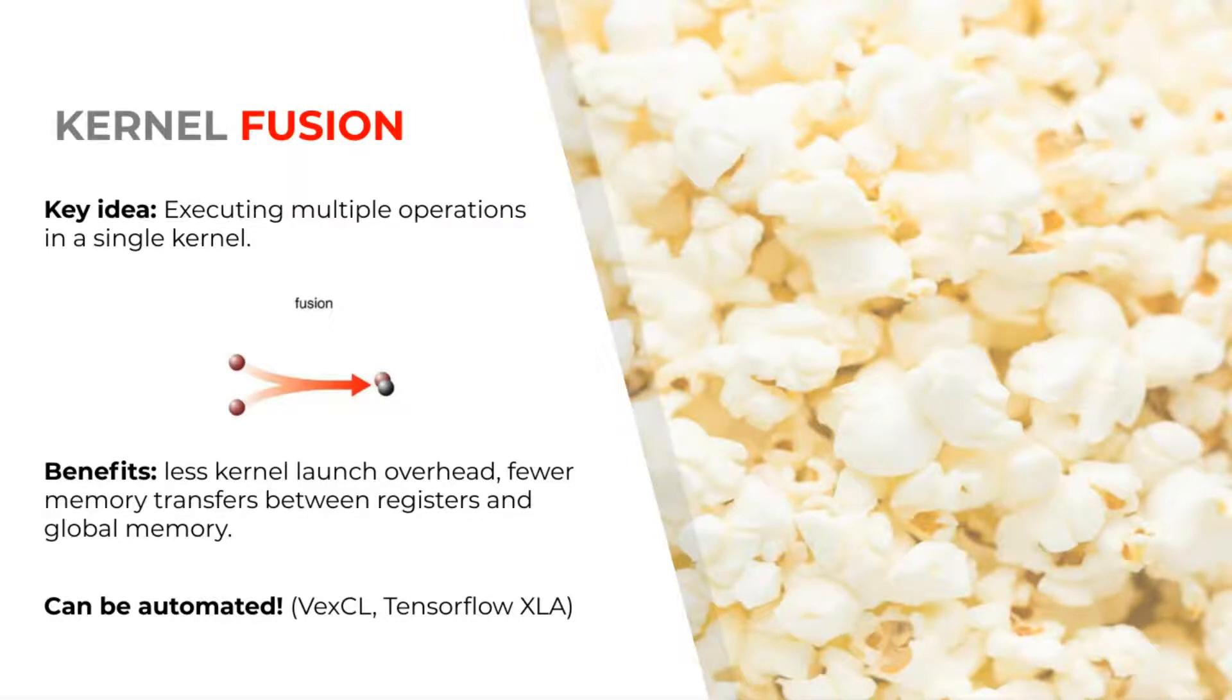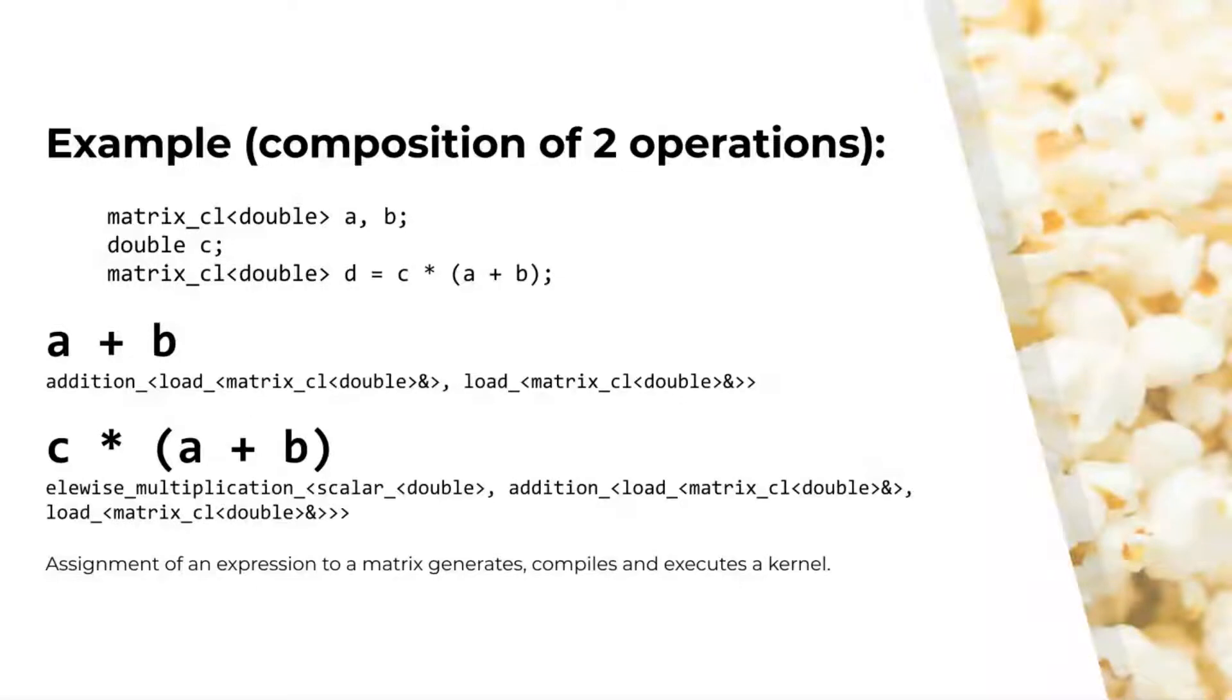Launching a kernel also carries overhead. By combining operations into fewer kernels, we are also reducing total overhead. In this example, you can see code for adding two matrices and multiplying the results with a scalar.